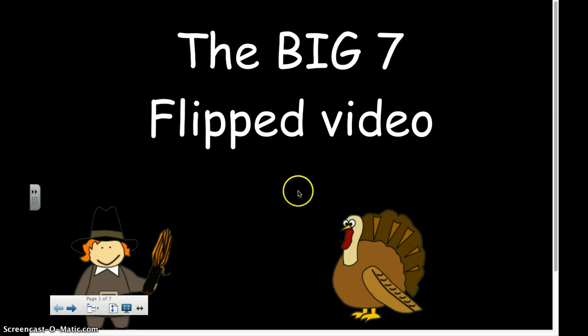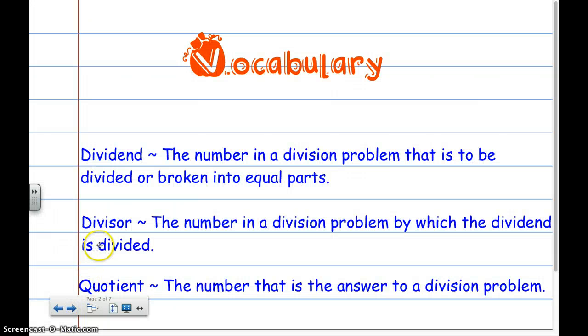Welcome to our next division strategy, and this is called the big seven. This strategy is kind of like traditional long division. Let's go over our vocabulary. Remember that you need to do the example and the non-example for your homework. Give an example of the definition and then also give something that is not the example.